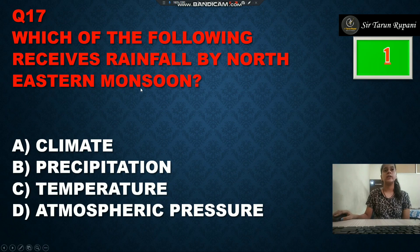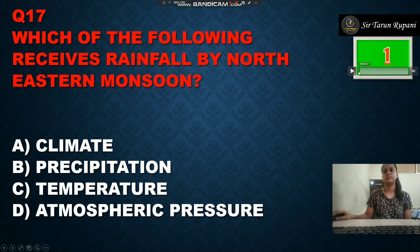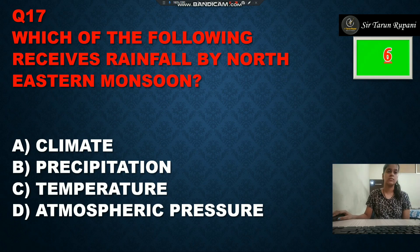Which of the following factors determines rainfall by the northeastern monsoons? Option A is timing, option B is precipitation, option C is temperature, and option D is atmospheric pressure. The timer is up and our correct answer is timing, option number A.